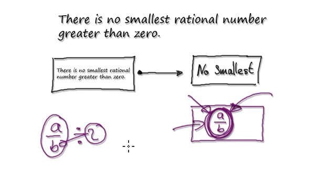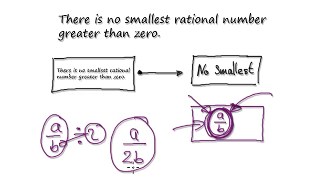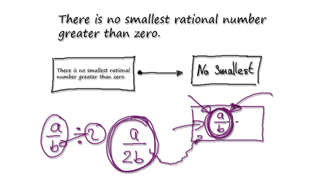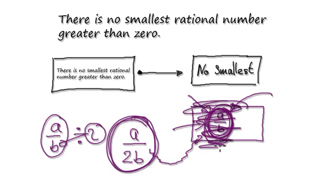When you divide a fraction, it gets multiplied to the bottom, so it becomes a over 2b. But then this here is a rational, because you can express it as a fraction, and it happens to be smaller than this thing here. So our assumption here is wrong — this assumption is false.